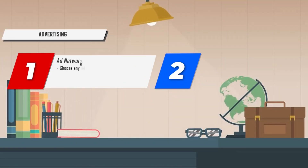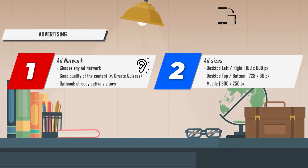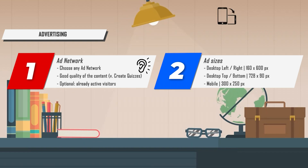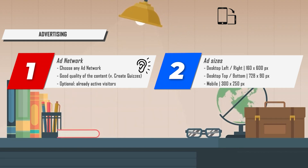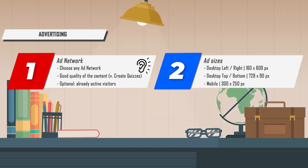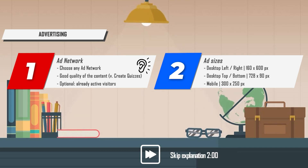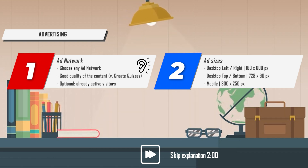Which ad network? An ad network is a company that connects advertisers with websites that want to place ads. For example, a shoe store wants to place advertisements and is a customer of an advertising network. The advertising network needs websites where they can place the advertisements. If you decide to use this advertising network, you will get the advertising of the shoe store placed on your website and you are paid for it by the advertising network.